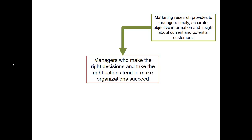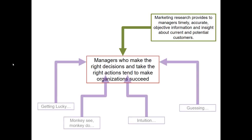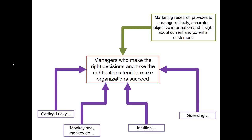It's worth keeping in mind that this is not the only mechanism that can be used to inform decision making. Some common ways bosses go about making decisions include simply guessing, using their intuition — sometimes called gut instinct or management gut — imitation or monkey-see-monkey-do (looking at what a competitor does and copying it), or just getting lucky. Every single one of these other approaches has something going for it: they tend to take less time, less money, and less effort than a marketing research-based approach.